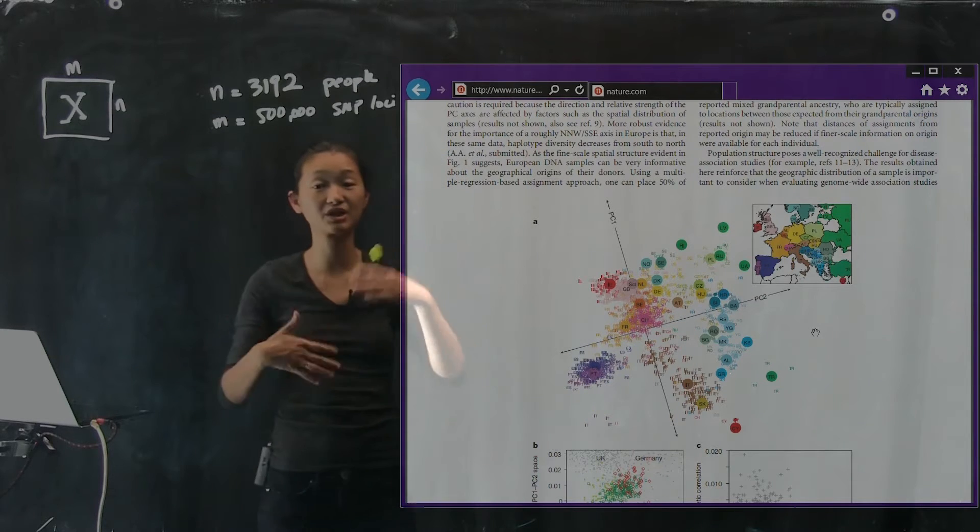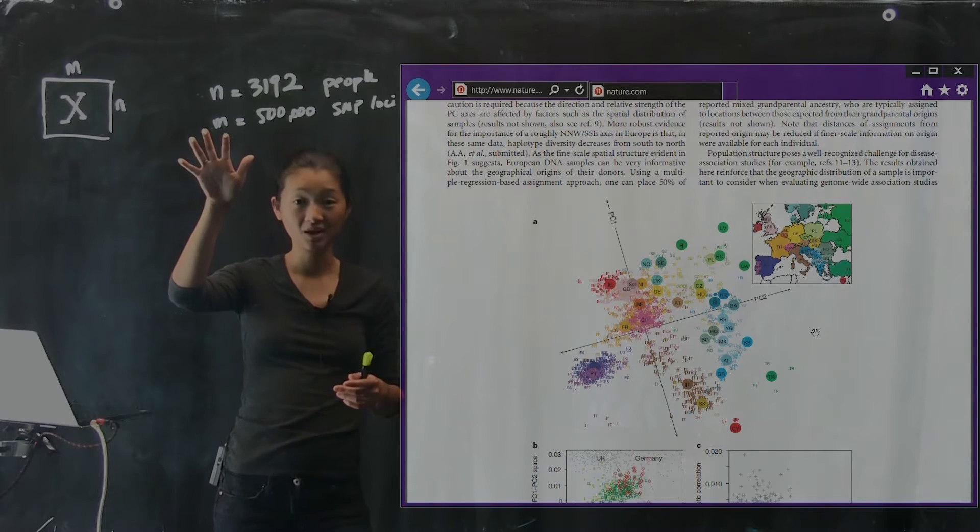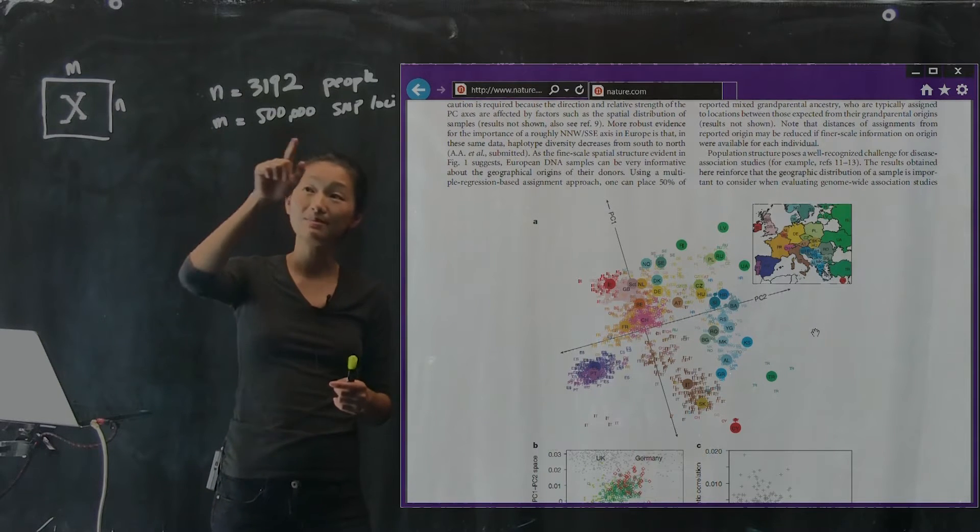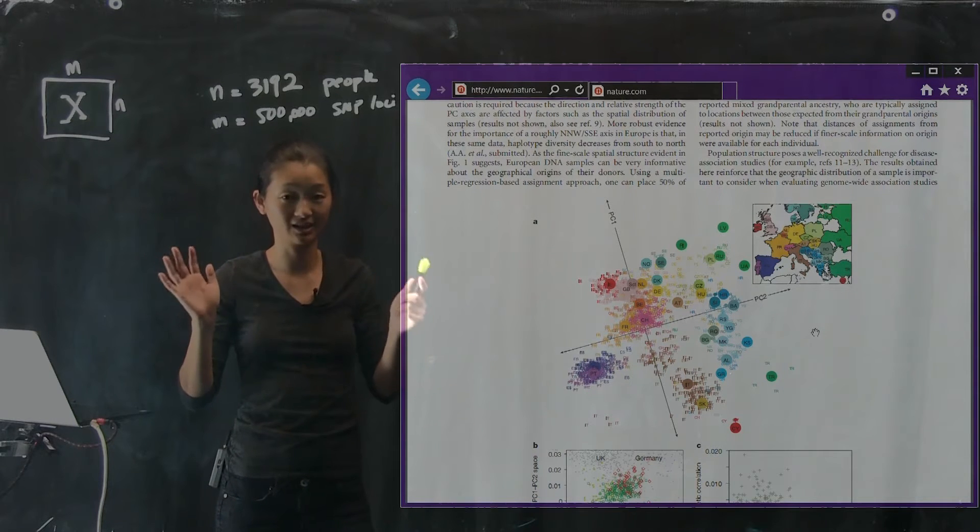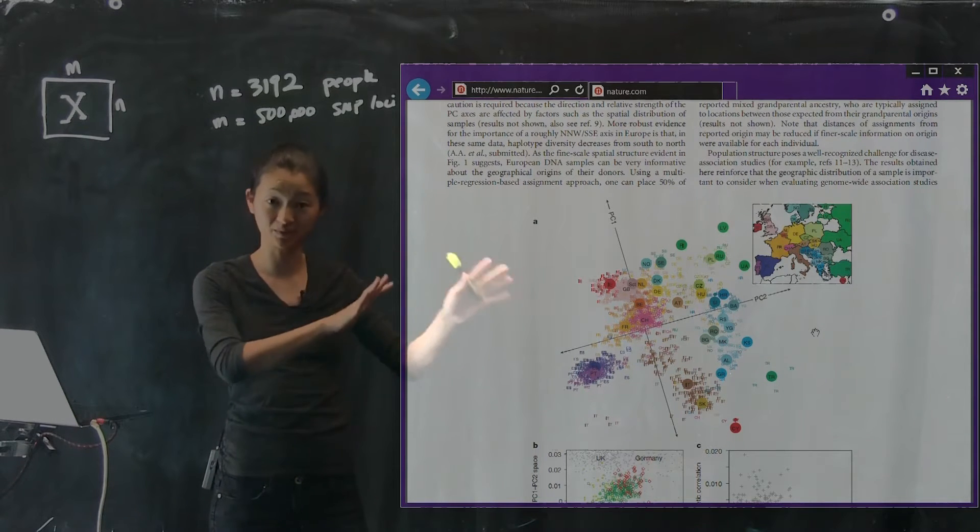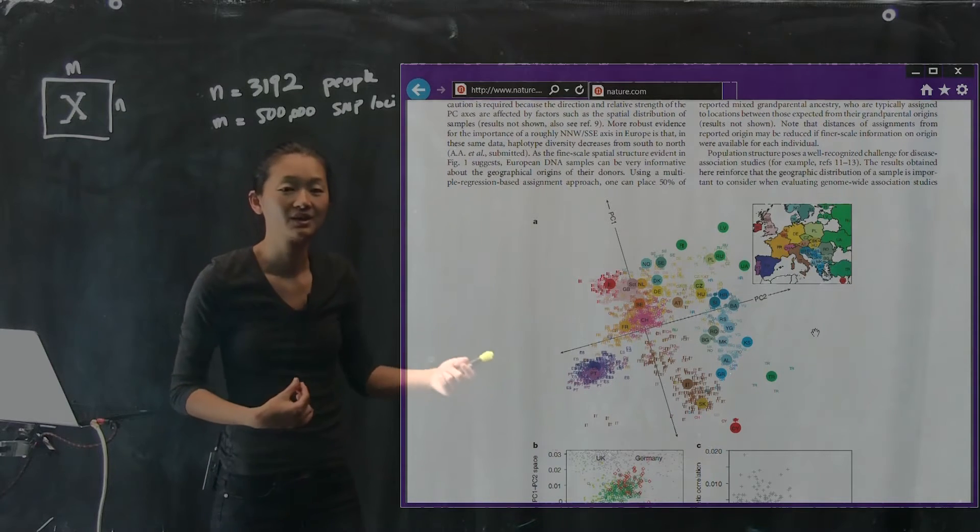So this is a change of coordinates, right? So now instead of having 500,000 dimensional data, we're just looking at two dimensions. But we didn't pick two dimensions out of these. This is some transformation of the data, the details of which we'll go through later.